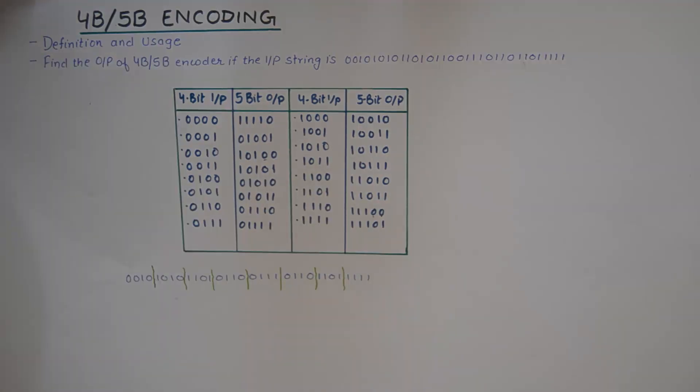Then the rest of the calculation becomes easier because for these 4-bit inputs, you simply need to copy the 5-bit output from the table. For example,